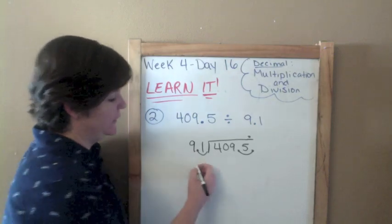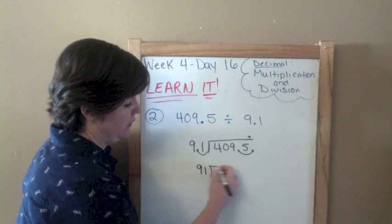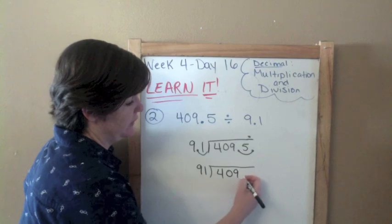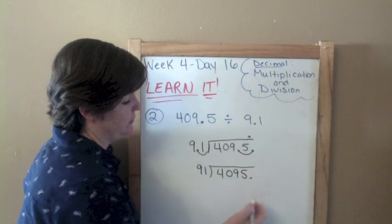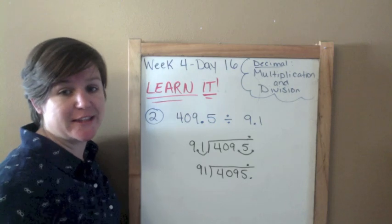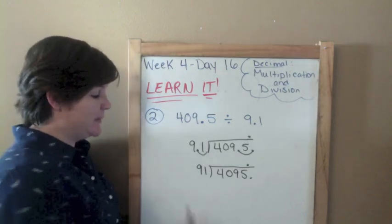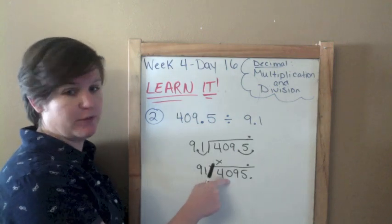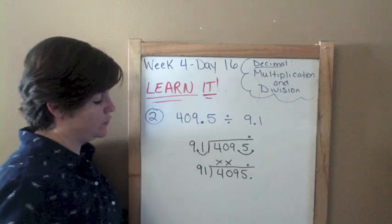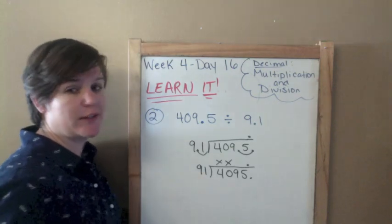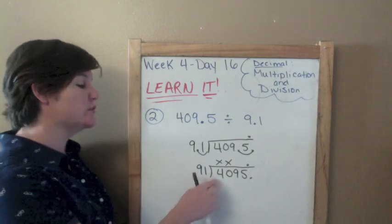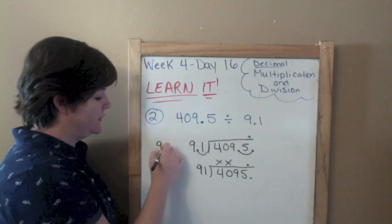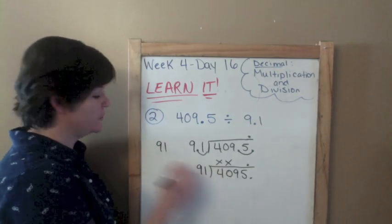And then our decimal will actually come up like that. But, I like to rewrite it. So, I'm going to go ahead and do that. As 91 with my divisor. And 4095. And there's my decimal. And there's my decimal if I need to get there. Alright, so how many times does 91 go into 4? It can't. How many times can 91 go into 40? It can't. It's too small. How many times can 91 go into 409? Well, I know that 90 can go into 409 maybe about 4 times. Because 9 times 4 is 36, which is close to 40. Let's see.